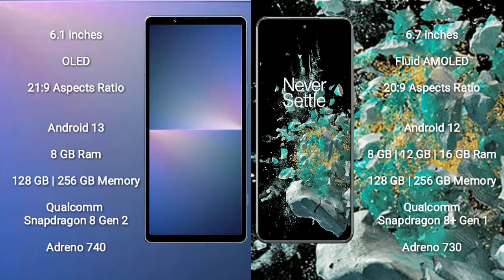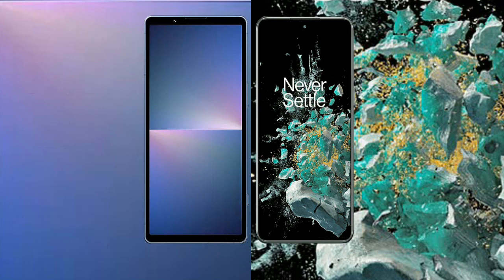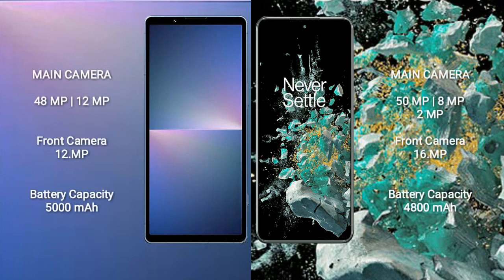The Sony Xperia 5 Mark 5 features GPU Adreno 740. OnePlus 10T comes with 8GB, 12GB, or 16GB RAM and 128GB to 256GB internal storage, Qualcomm Snapdragon 8 Gen 1 processor, and GPU Adreno 730.